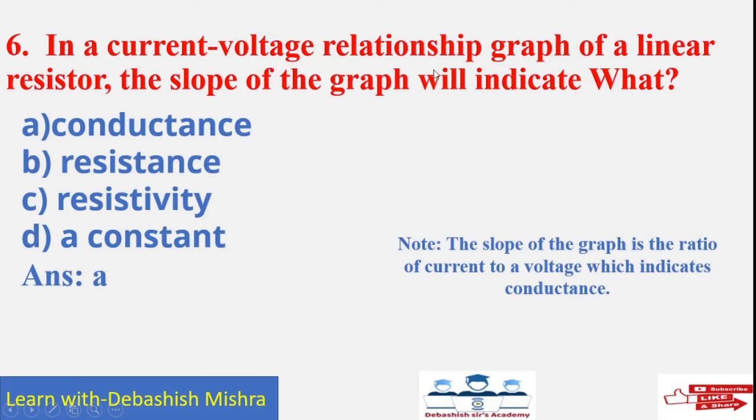In a current or voltage relationship graph of a linear resistor, the slope of the graph will indicate what? Here is the note. The slope of the graph is the ratio of current to voltage which indicates the conductance. I to V is conductance. So, answer A is the correct answer, conductance.